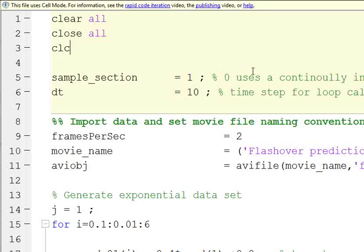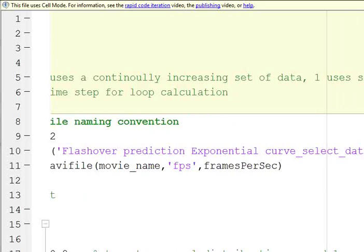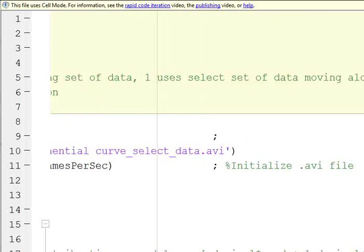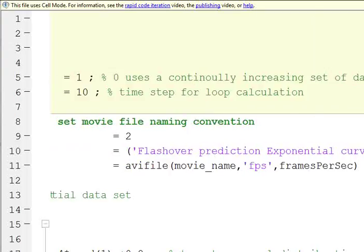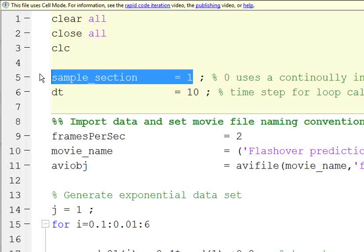We have a sample selection. One, zero uses a continuously increasing set of data. One uses a select set of data moving along the entire data set. So you can run it either way by changing this variable from zero to one or one to zero either way.